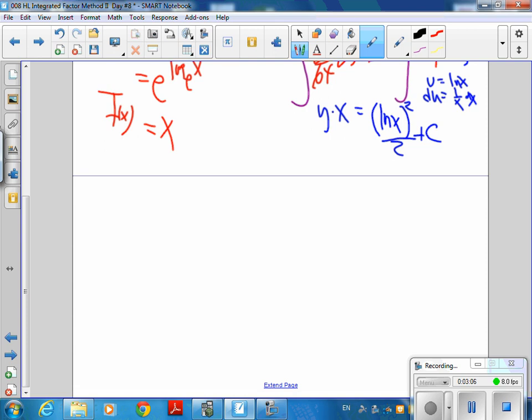So then we'll just have y is equal to ln of x squared divided by 2x plus c over x. I just divided everything by x.